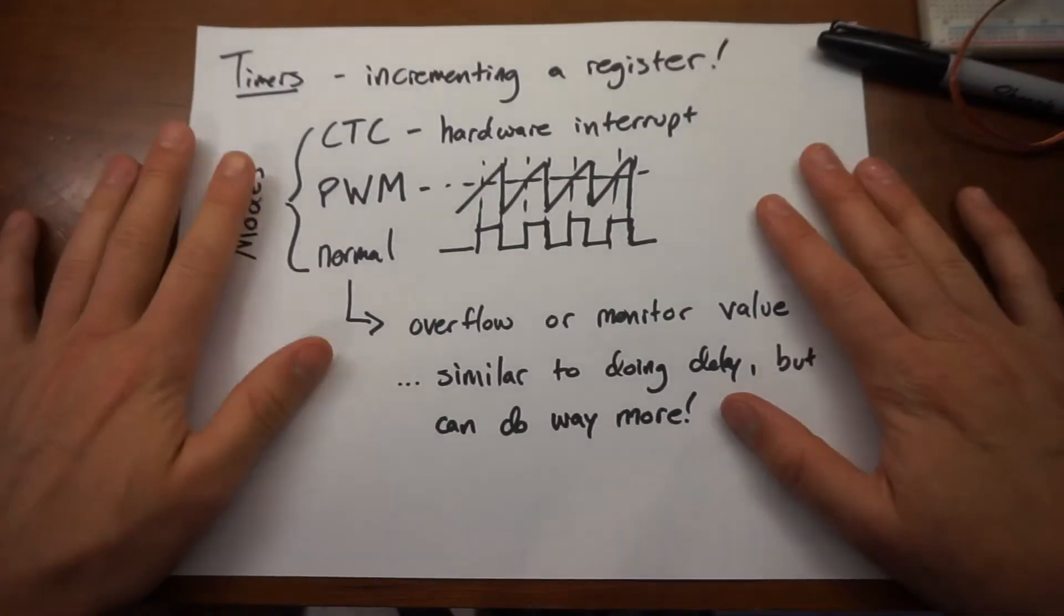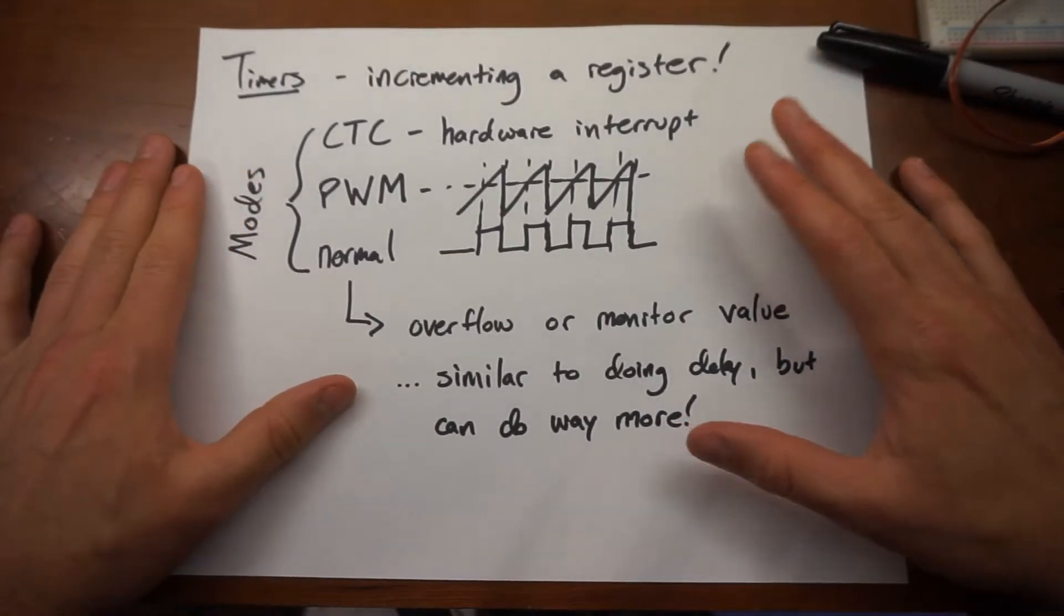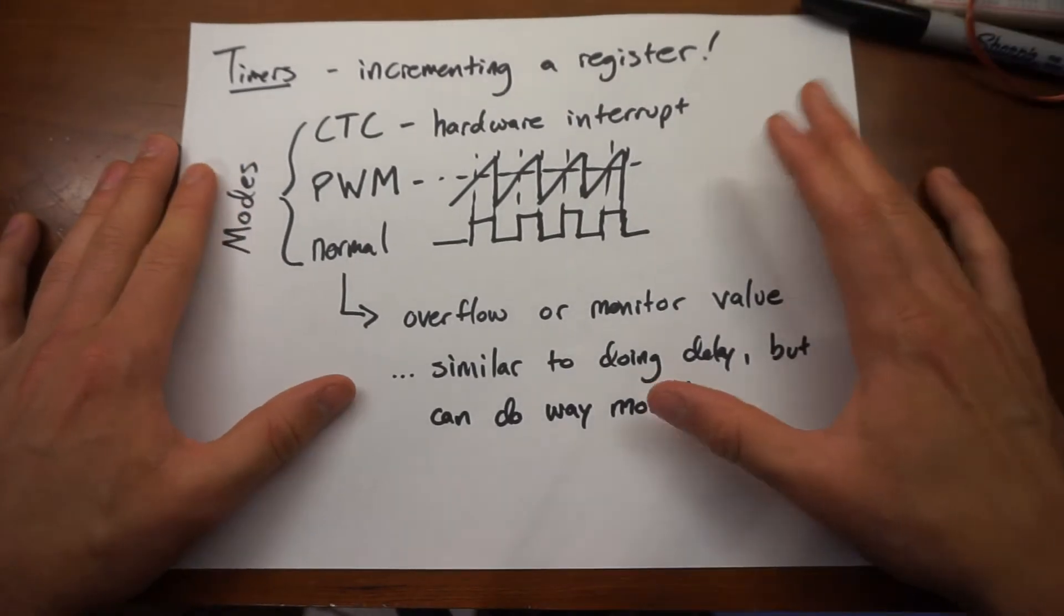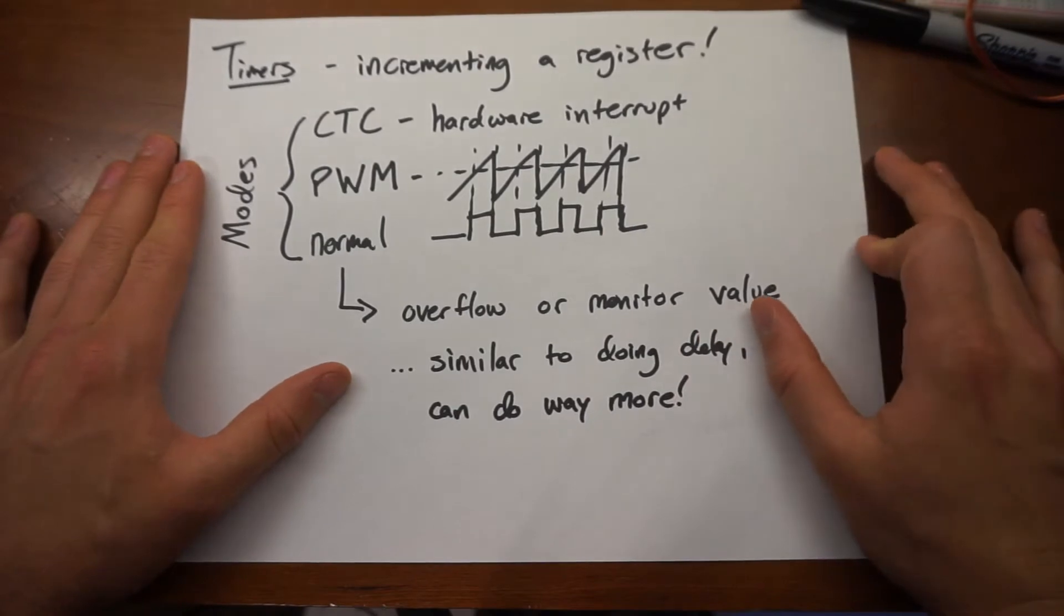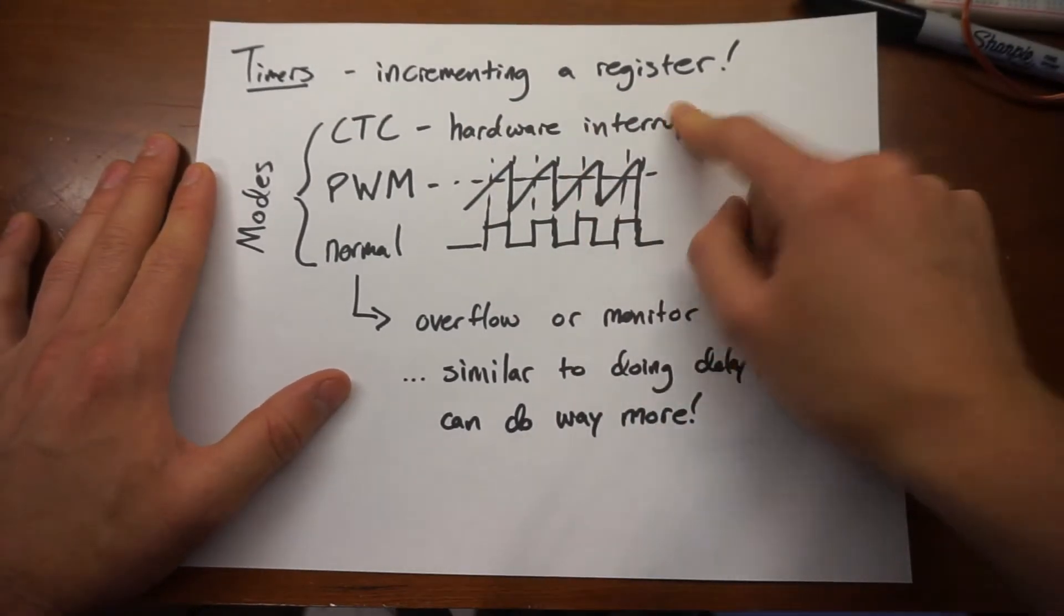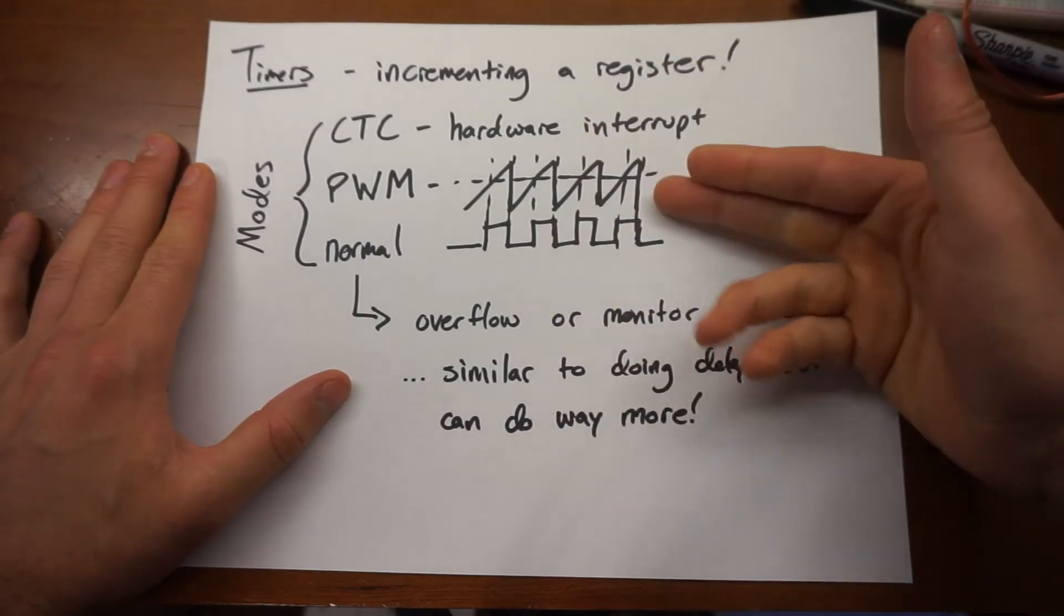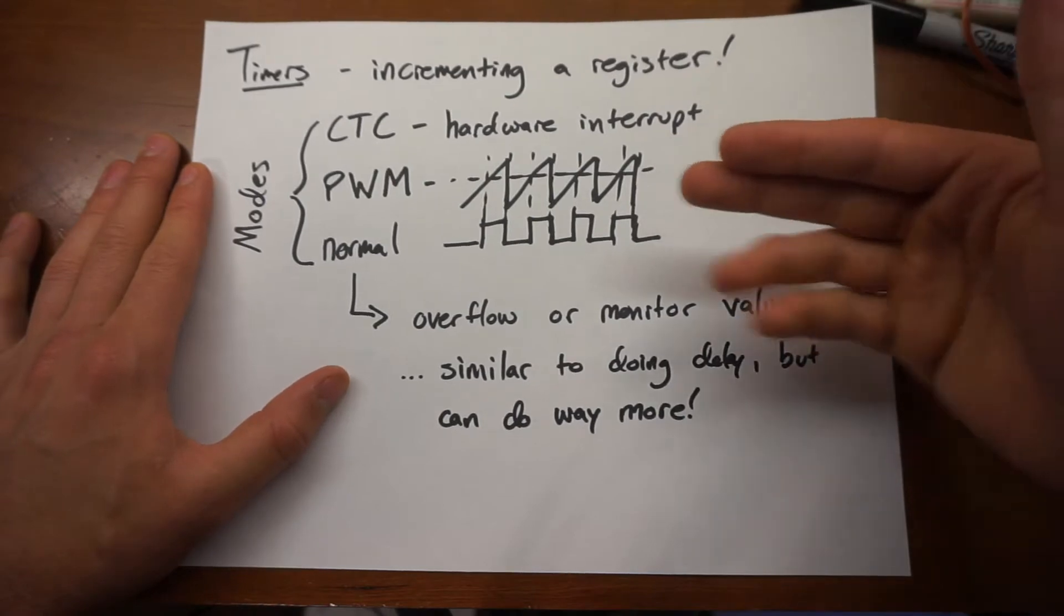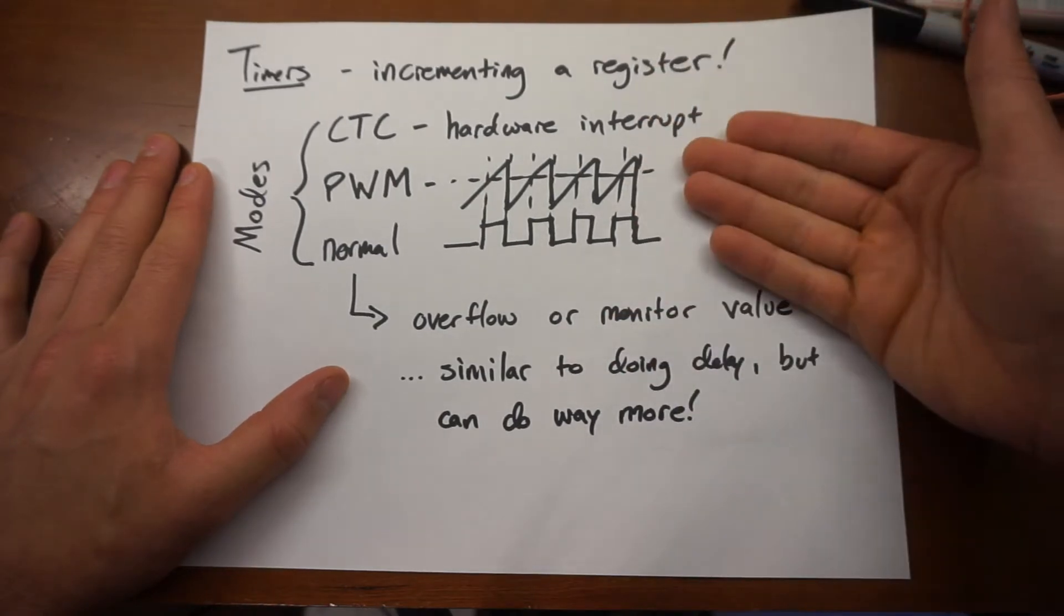So what are timers? Well, I don't want to get too into it. We could do maybe a separate video on that because today I just want to show you the thing that I made. But a timer is just a register. It's just a register that's incremented once every clock cycle or some multiple of clock cycles. And that comes about when you use what's called a pre-scale factor.